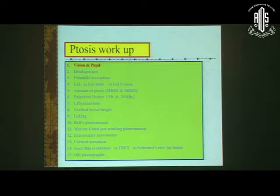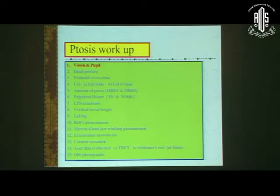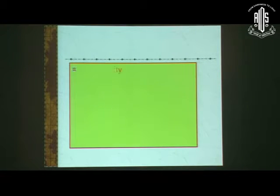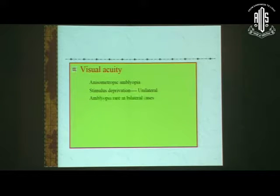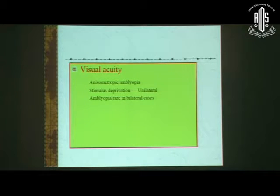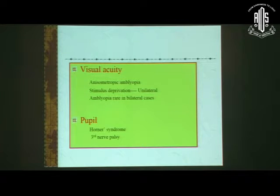A complete ptosis workup is done under 15 headings. First and foremost, why is vision important? Because most of these patients have anisometropic amblyopia. Stimulus deprivation is seen in cases with severe unilateral ptosis only, and it's rare in bilateral cases because they develop a chin-up position.